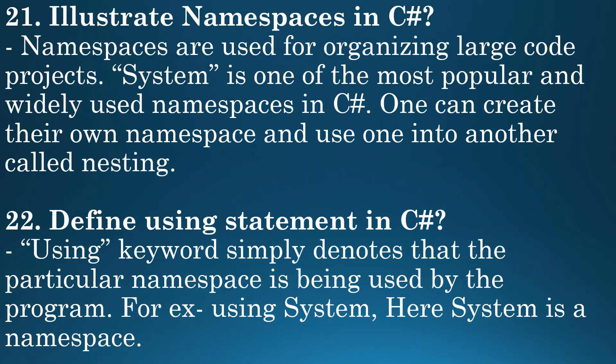Next question: illustrate namespaces in C-Sharp. Namespaces are used for organizing large code projects. System is one of the most popular and widely used namespaces in C-Sharp. One can create their own namespace and use one into another, called nesting. The using keyword simply denotes that the particular namespace is being used by the program. For example, using System — here System is a namespace.